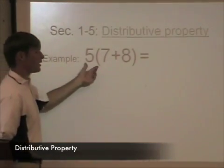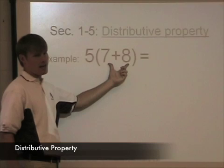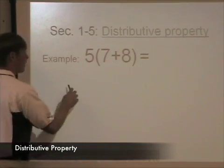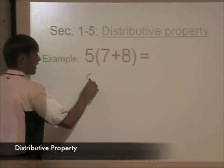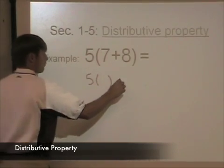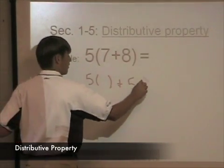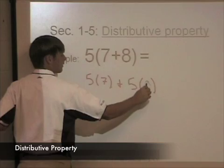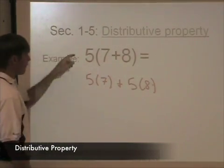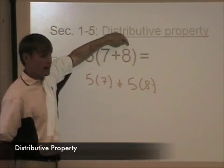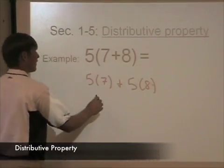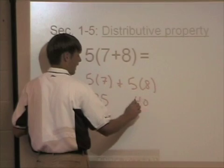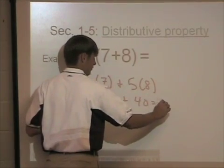Now, this number 5 is being multiplied by 7 and 8. 5 times 7 plus 8. So we're going to rewrite it as 5 times 7 plus 5 times 8. 5 times 7 is 35, 5 times 8 is 40. And when I add them up, what do I get? 75.